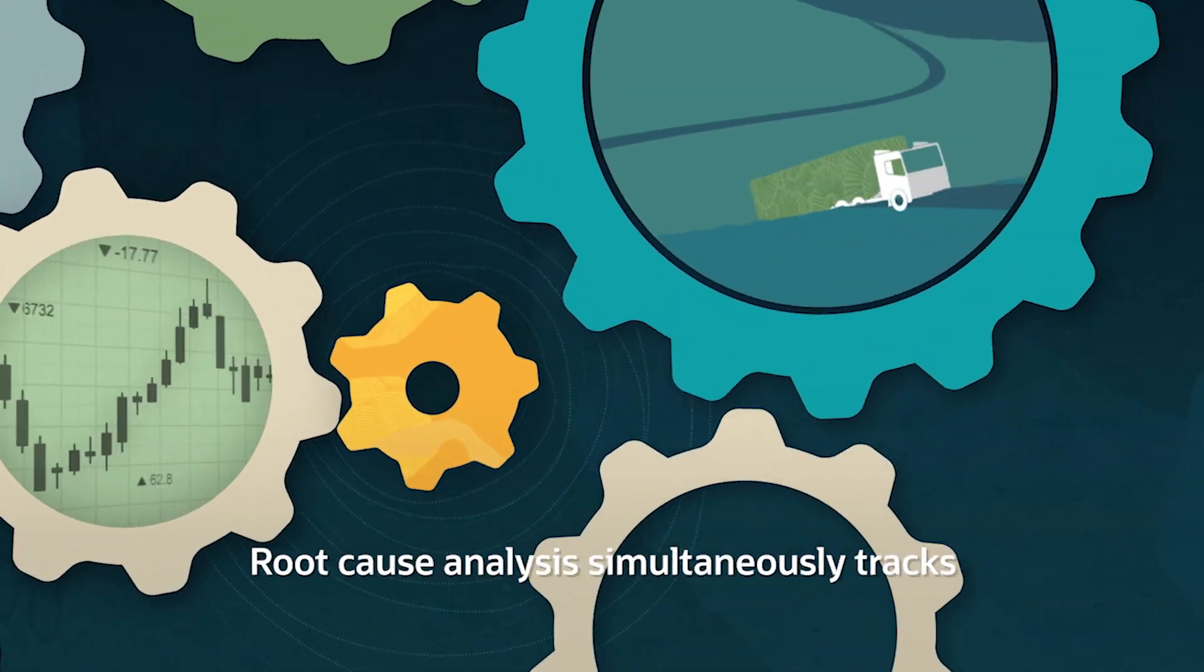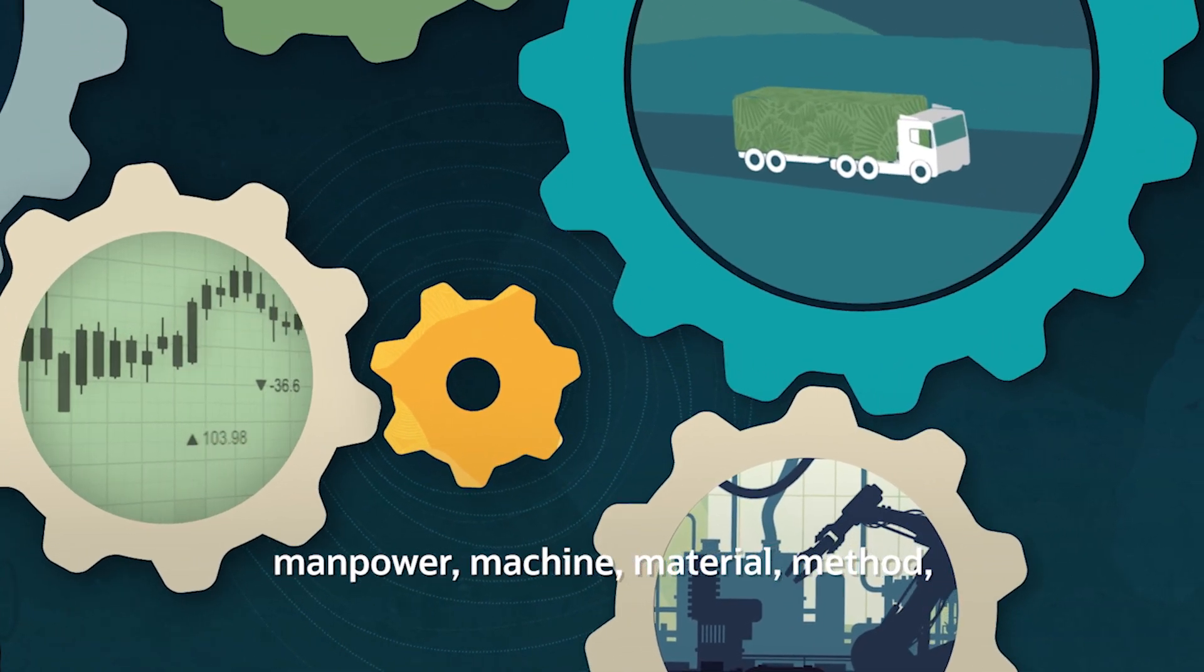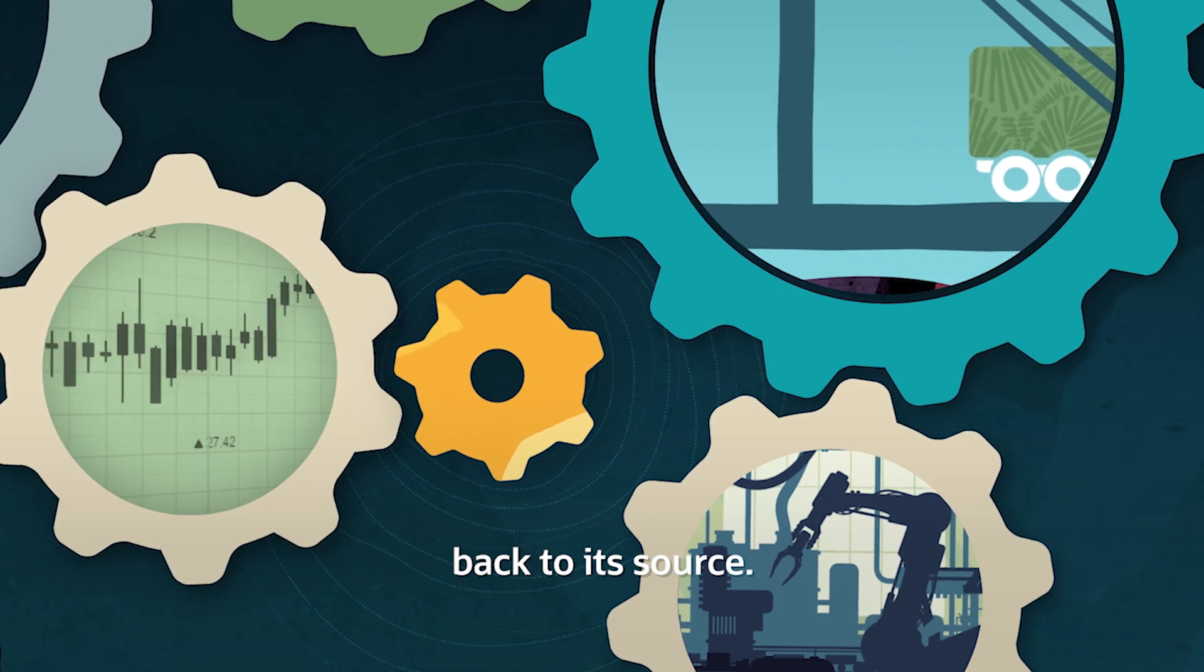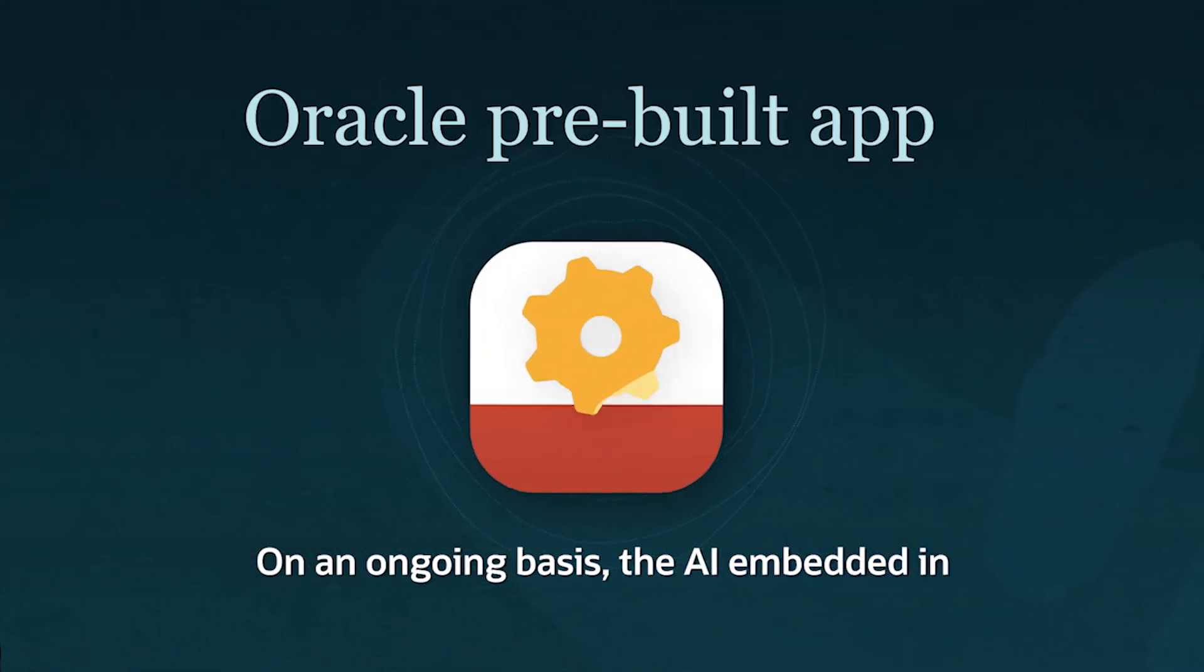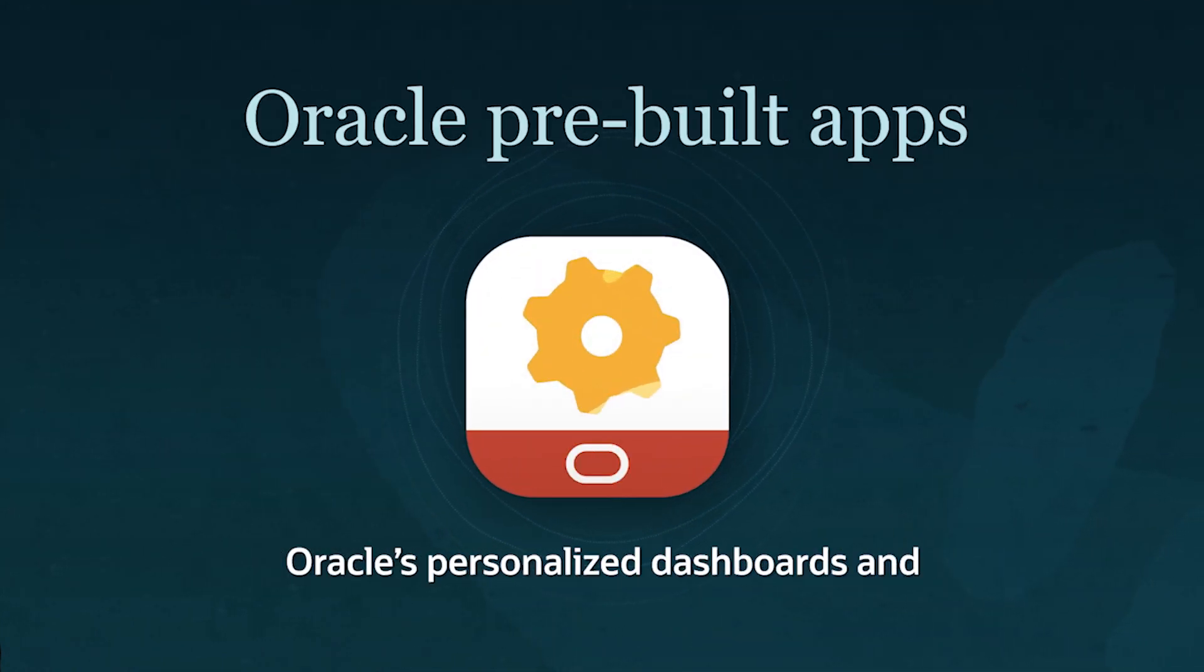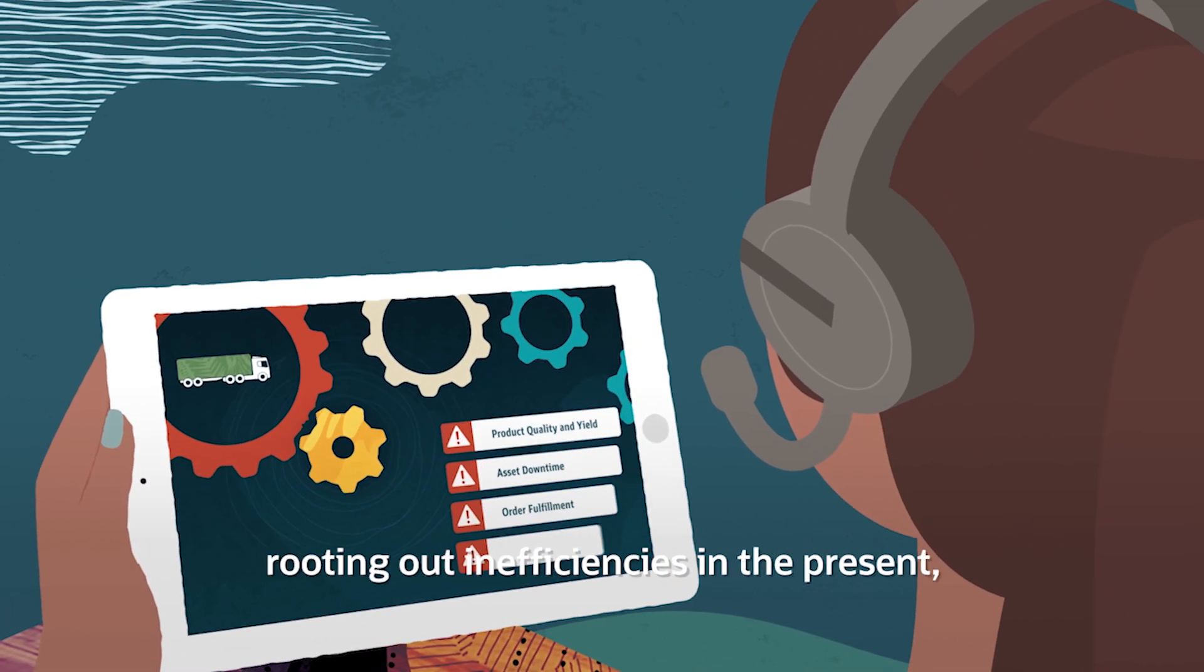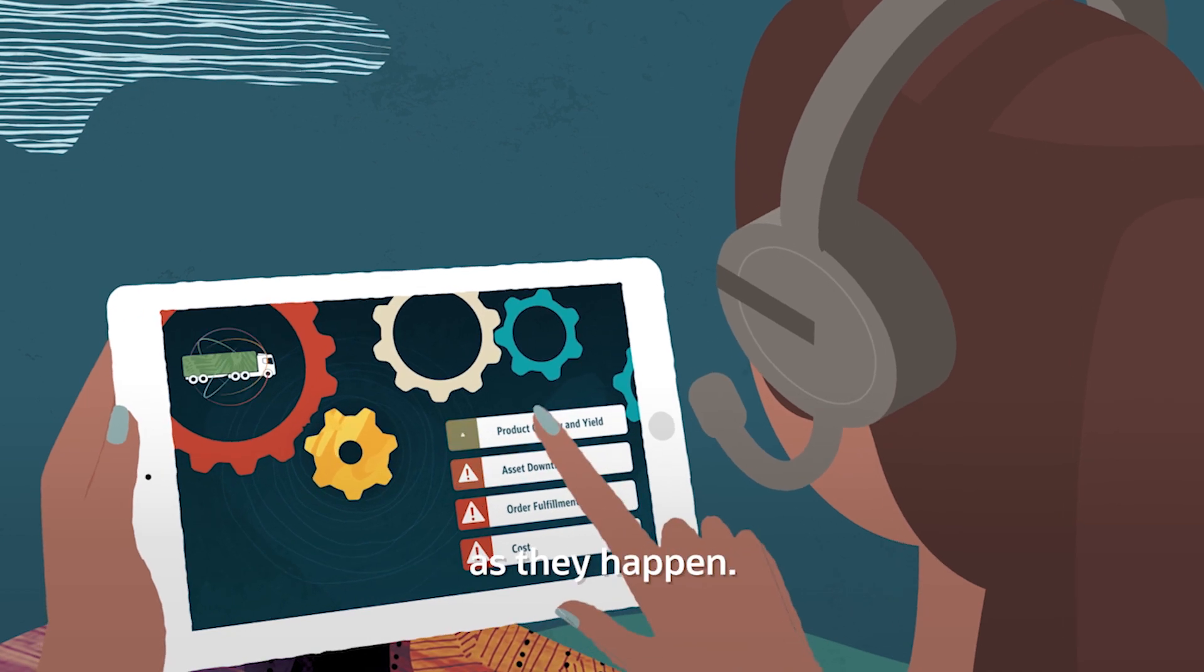Root Cause Analysis simultaneously tracks manpower, machine, material, method, and management-related information back to its source. On an ongoing basis, the AI embedded in Oracle's personalized dashboards and visualizations enables real-time understanding of operations, rooting out inefficiencies in the present as they happen.